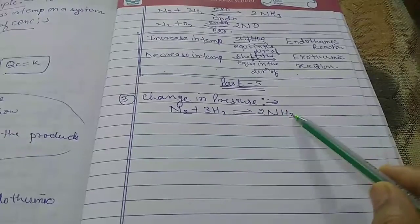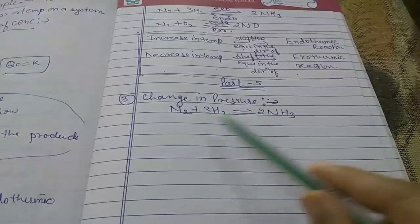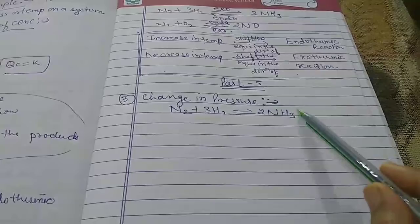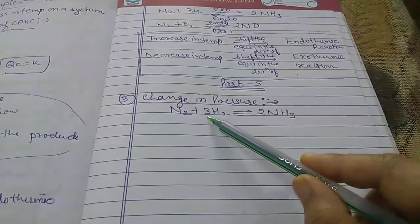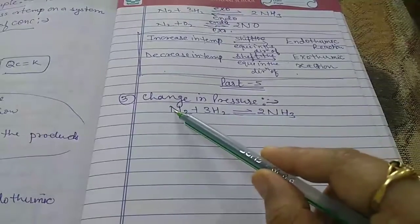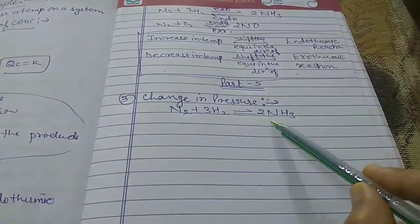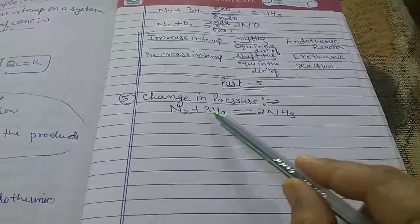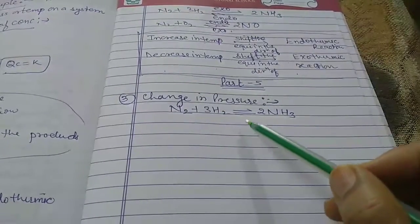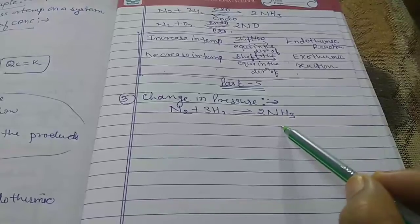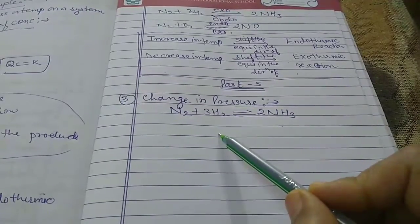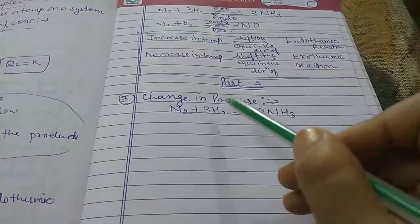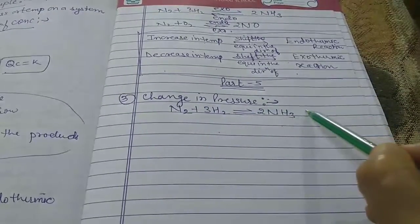Looking at this reaction, the number of moles in the products is 2 — we have 2 moles of NH3. The number of moles in the reactants is 3 + 1 = 4. So here we have 2 moles on the product side and 4 moles on the reactant side. The equilibrium will shift in the direction where we have the lesser number of moles, which in this case is the forward direction.